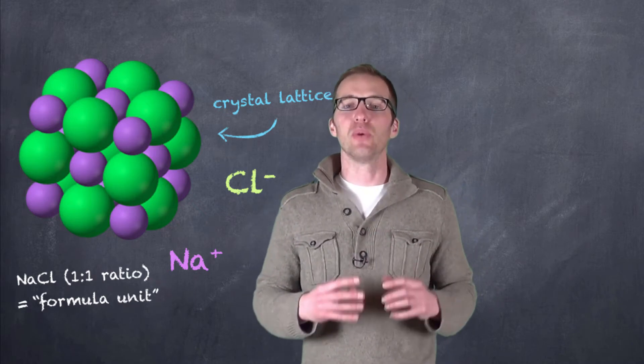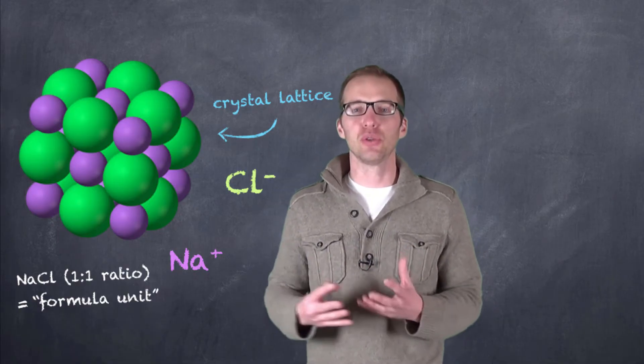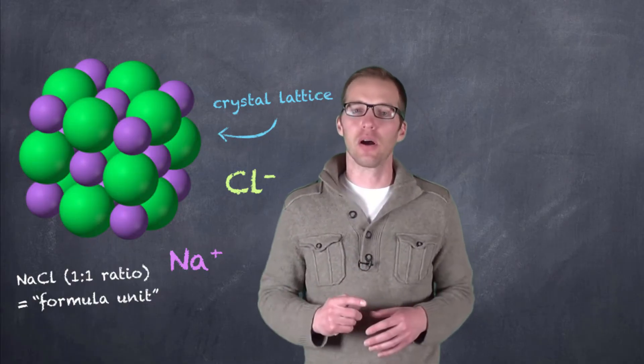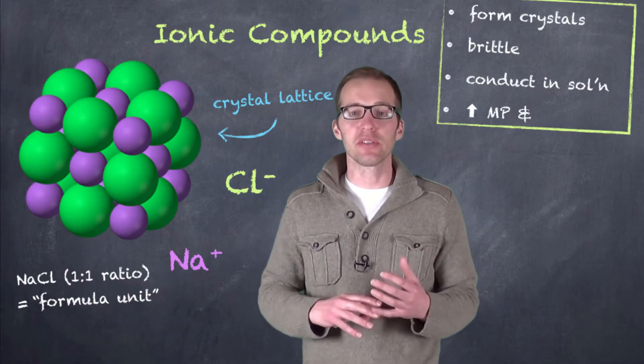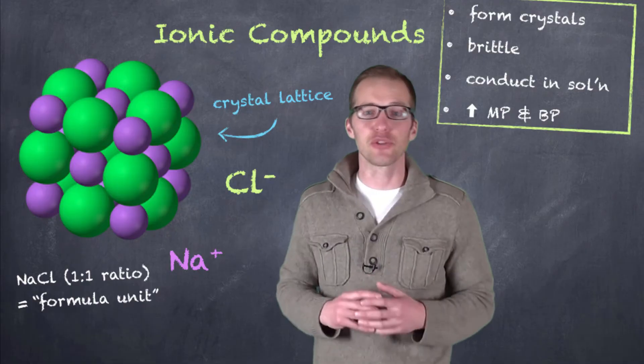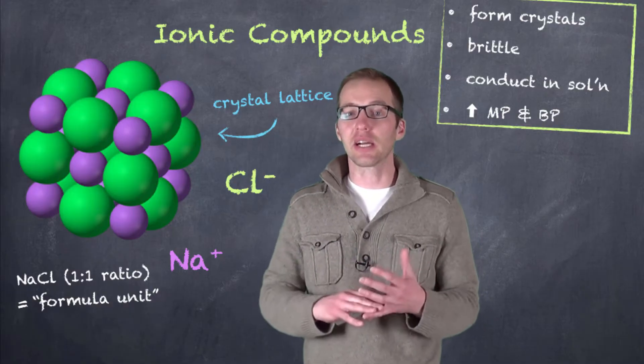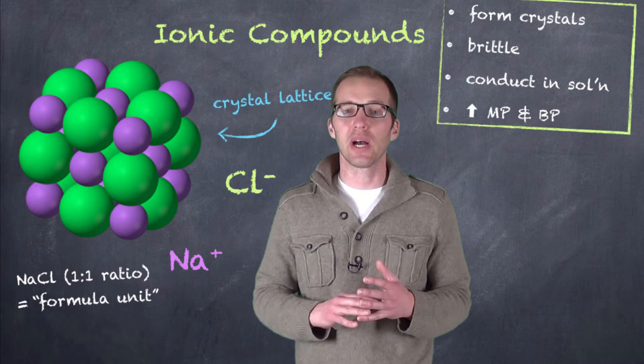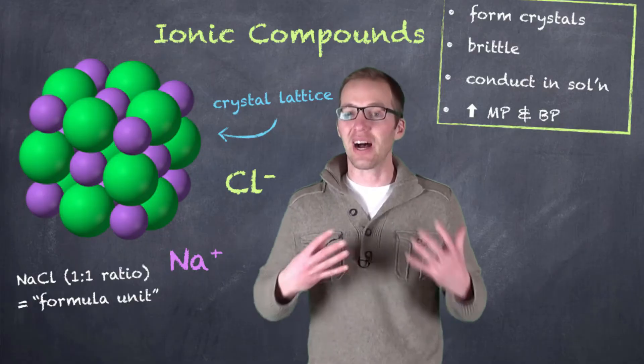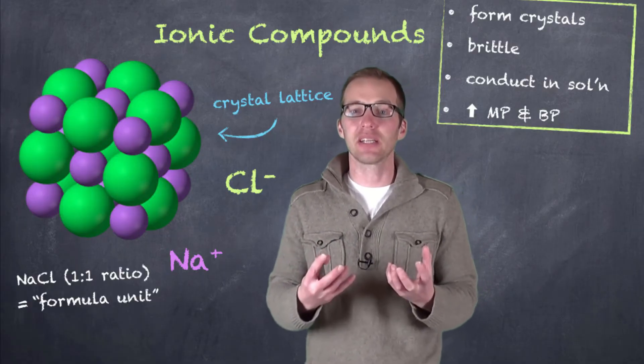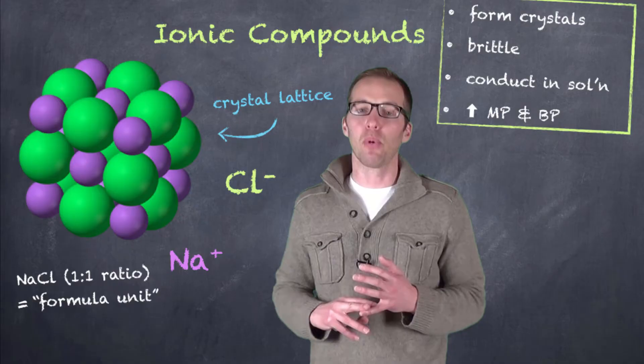And that NaCl we refer to as a formula unit. So a formula unit of an ionic compound would be analogous to what we call a molecule if it is a molecular compound. Now, ionic compounds have some pretty general characteristics. They form crystals, as we can see from their crystal lattice structure. They're generally brittle, so if you were to hit them or crush them with a hammer, they're going to shatter. And they conduct electricity in solution. So that's usually why it's not a good idea to have electrical appliances in the shower or in the bath, because all of the salts, the ions that are on your body, they can make water conductive, not to mention the ions that are probably already in your bath water. And they have relatively high melting points and boiling points.